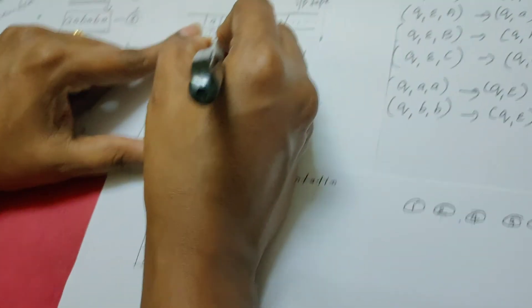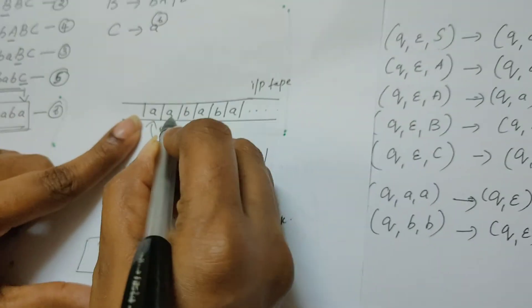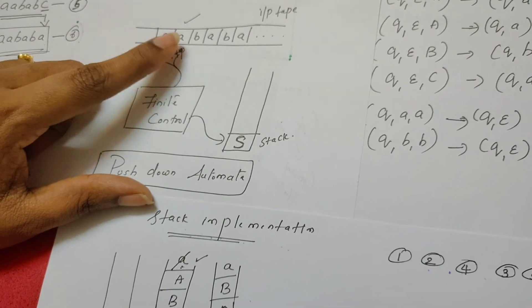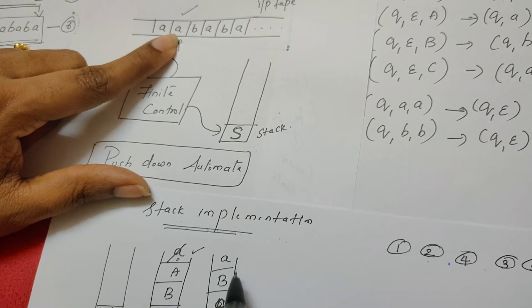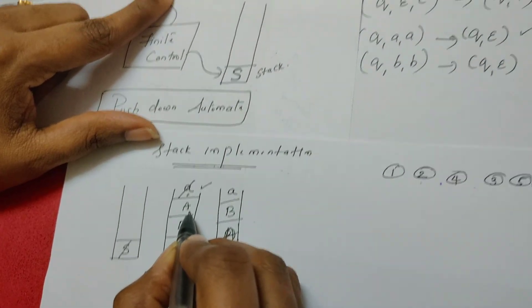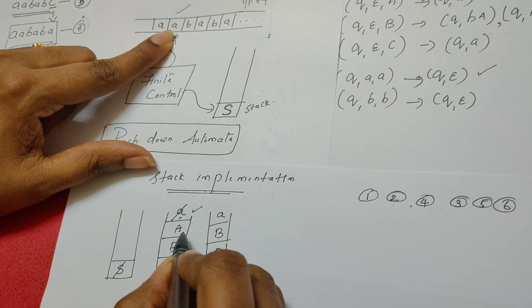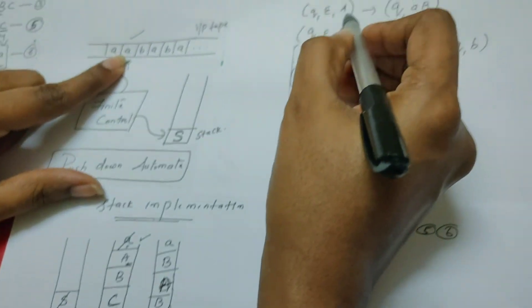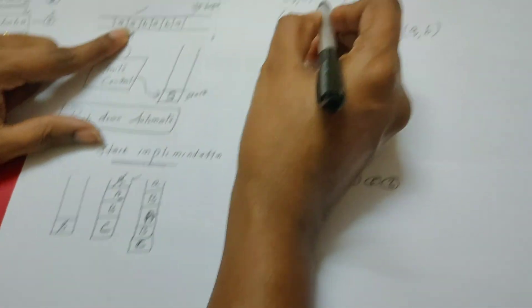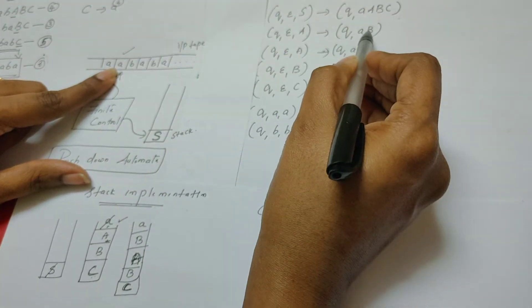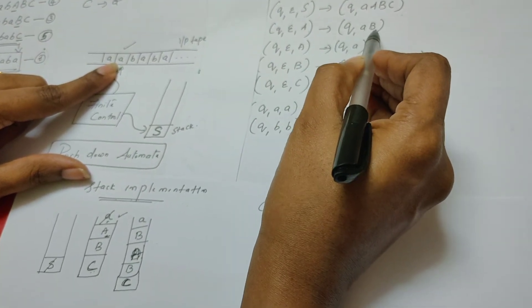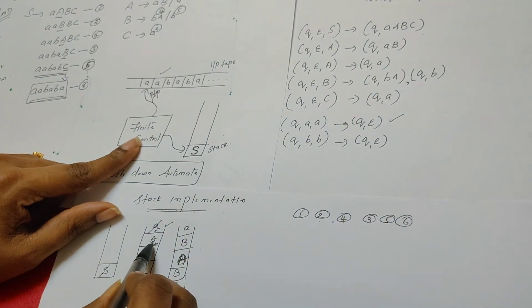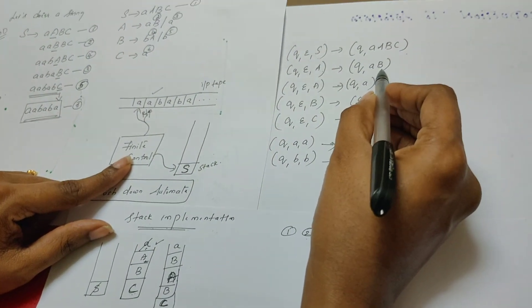The read-write head advances to point to the next input symbol, which is the second a. Now, what is at the top of the stack? Variable A is available. Whenever there is a variable, it does not read anything from the input tape. The parser selects the transition rule for A — there are two options: A, B or A. But in our derivation we chose A, B, so we push A, B onto the stack.